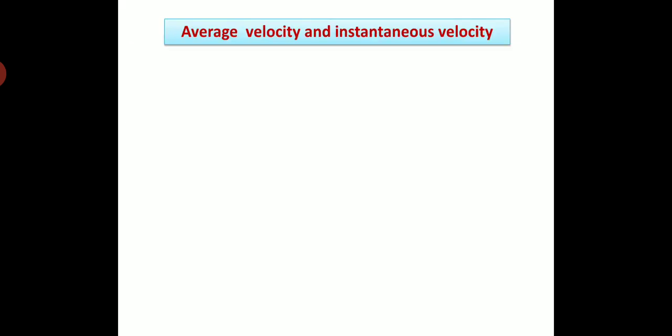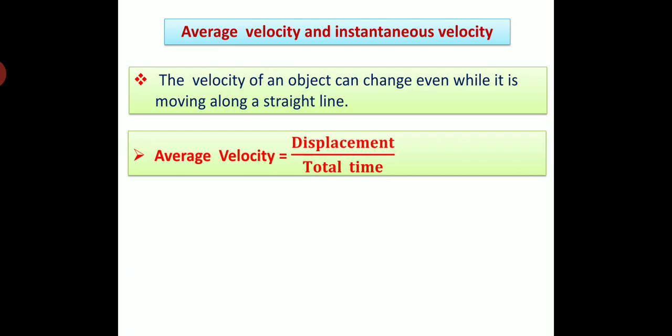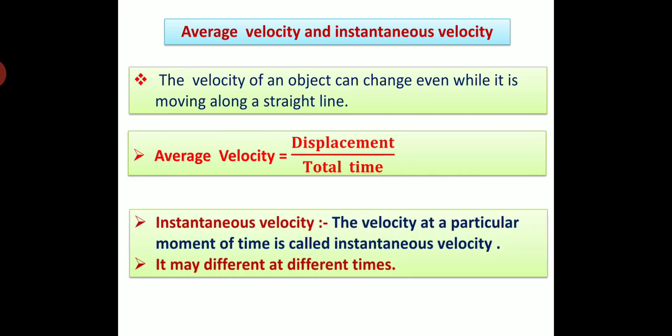Now, average velocity and instantaneous velocity. The velocity of an object can change even while it is moving along a straight line. We can calculate average velocity using the formula: average velocity equals displacement divided by total time. Instantaneous velocity: The velocity at a particular moment of time is called the instantaneous velocity. It may be different at different times.